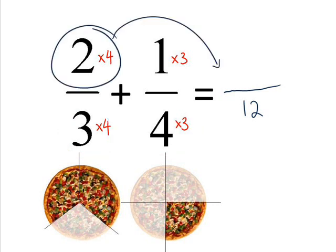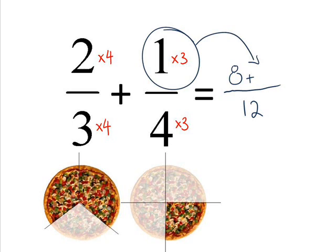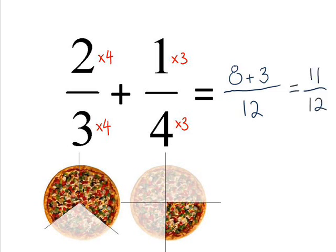For the top one, 2 thirds, we're going to be multiplying that one by 4. So, 2 by 4 is 8. And then for the 1 quarter, we times the bottom number there by 3. So, 1 times 3 is 3. This leaves us with 8 plus 3 over 12. The answer is 11 over 12.